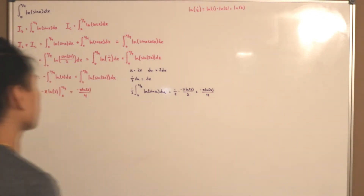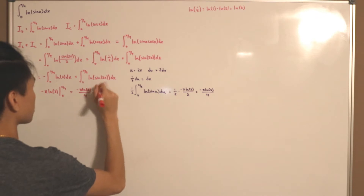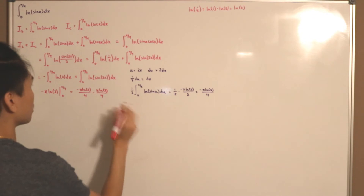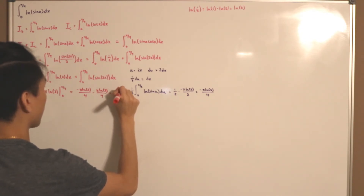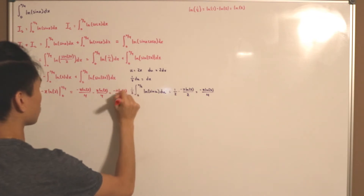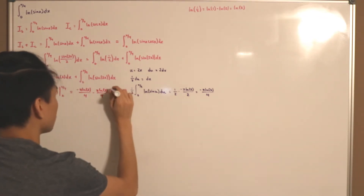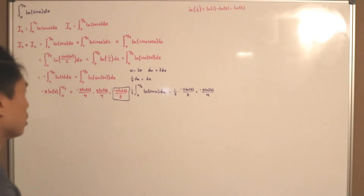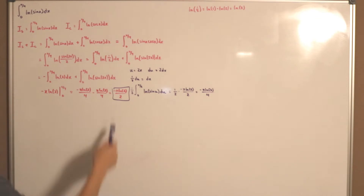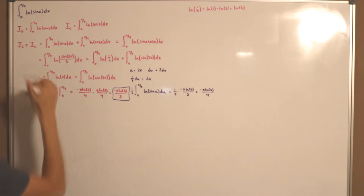So putting it together, we have negative π·ln(2)/4 minus π·ln(2)/4, which equals negative π·ln(2)/2. This is our result for I(s) + I(c).